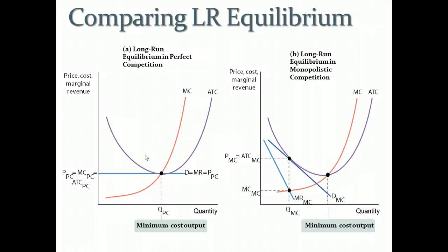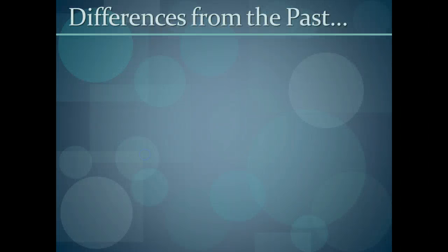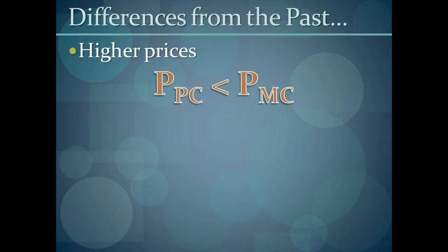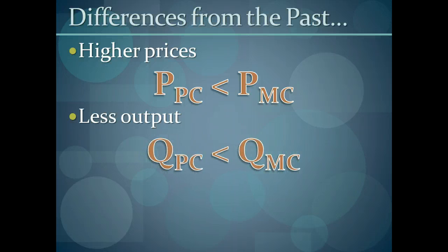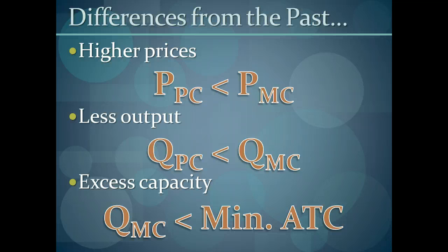And when we compare these two graphs, there are some generalities that we can make. One is that there are higher prices in monopolistic competition than there are in perfect competition. We can also say that they produce less output in monopolistic competition than they do in perfect competition. And there's also this concept called excess capacity in monopolistic competition. There is more production that could be made that would lower average total costs. So we're not being the most efficient in our production. But because of the fact that there's a downward sloping demand curve, the profit maximizing level of output is less than essentially our full capacity. And so we're producing less than we could.